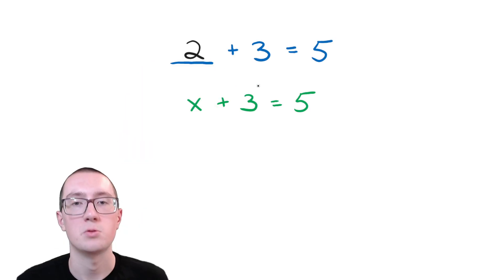Letters are just blanks that you can insert numbers into. So the answer to this problem, x plus three equals five, would be x equals two, because two goes in the blank.